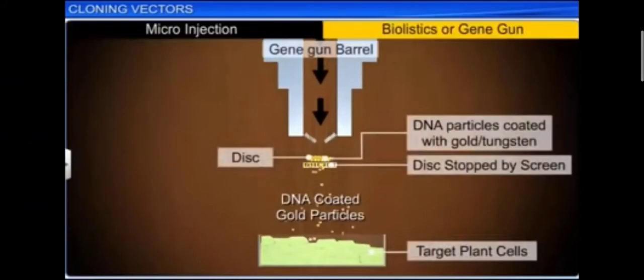While in the biolistics or gene gun method, plant cells are bombarded with high-velocity microparticles of gold or tungsten coated with DNA.